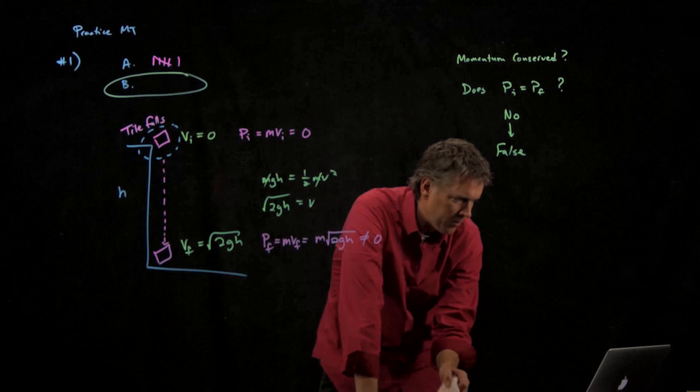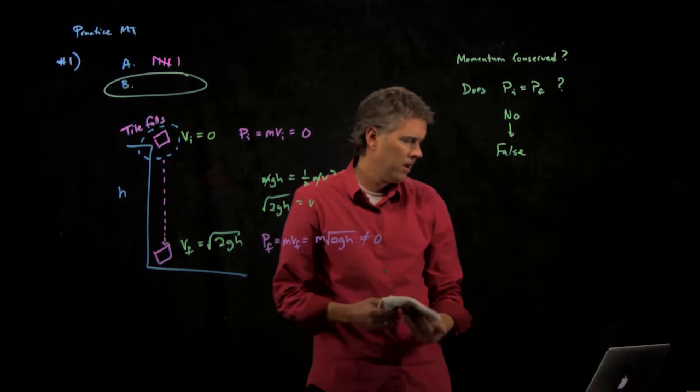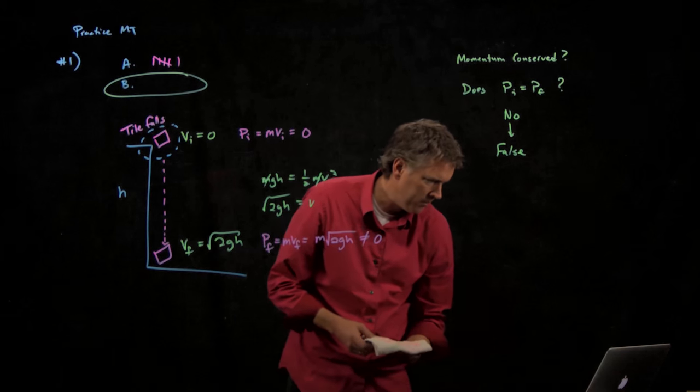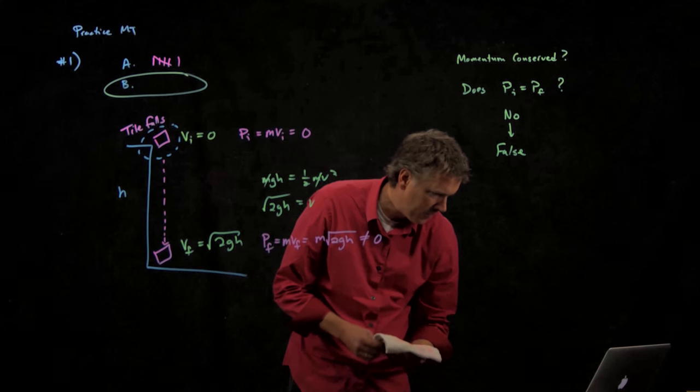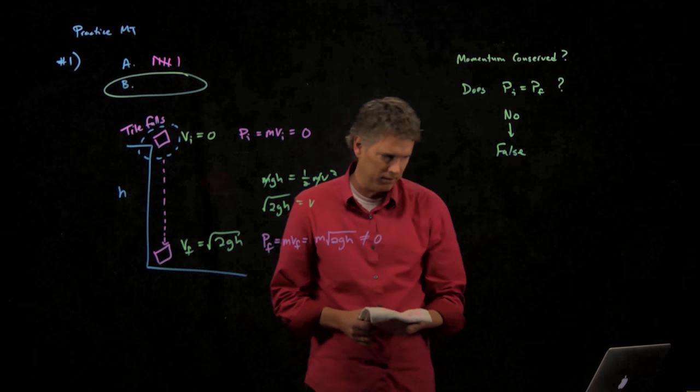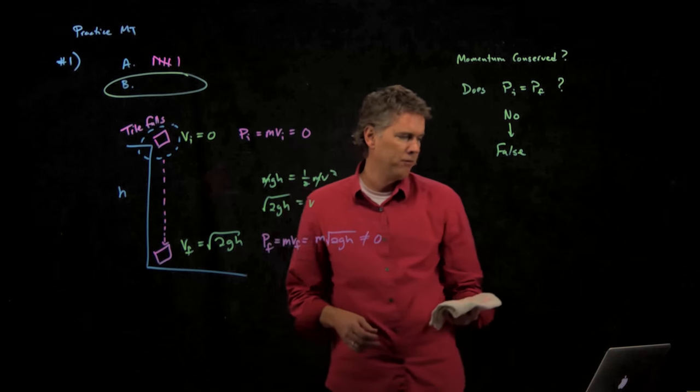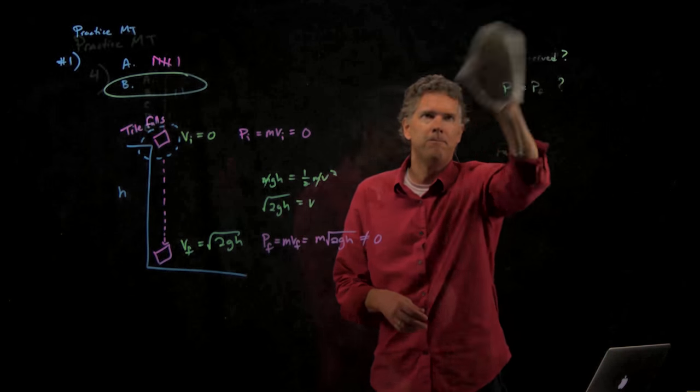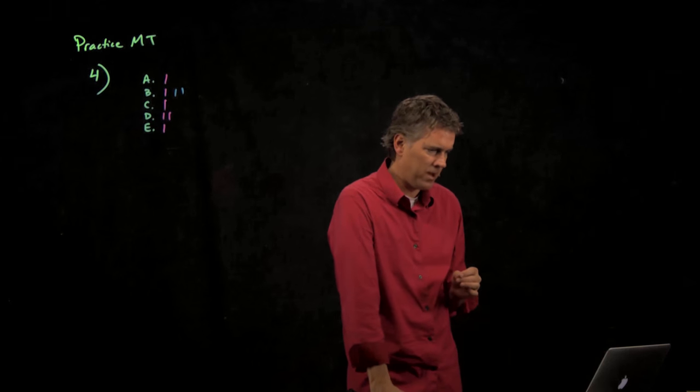Number four says during a collision with a wall the velocity of a ball changes from 20 meters per second to 12 meters per second away from the wall. The ball was in contact with the wall for 60 milliseconds. What was the magnitude of the average force applied to the ball?